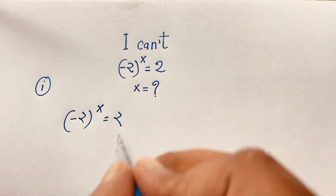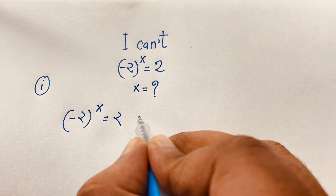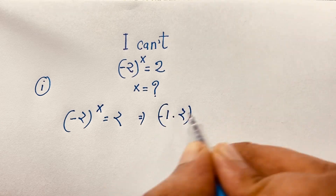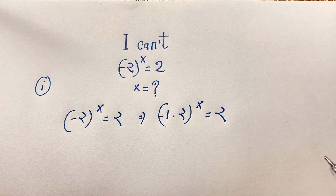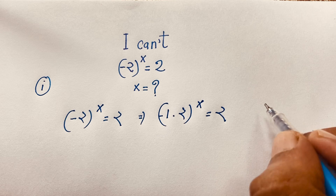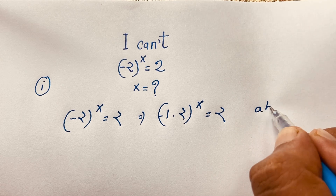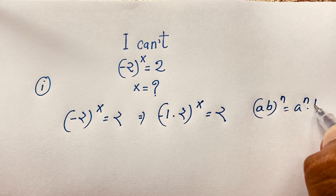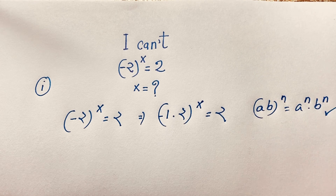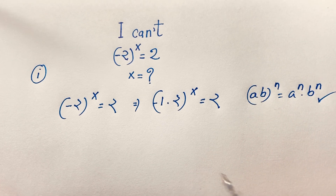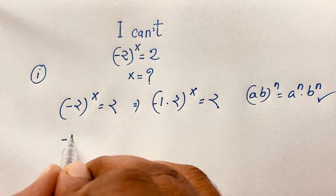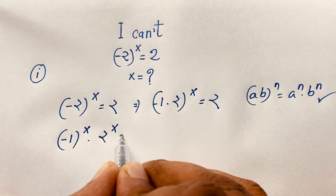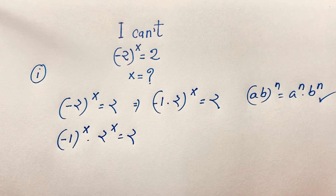We can write -2 as (-1 × 2), so (-1 × 2) whole to the power x is equal to 2. Now using the exponential law (ab)^n = a^n × b^n, this expression becomes (-1)^x times 2^x is equal to 2.